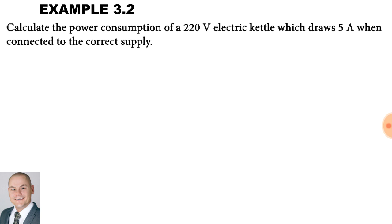Another calculation. Calculate the power consumption of a 220 volt electric kettle, which draws 5 amps when connected to the correct supply. The voltage is 220, the current is 5 amps, and the power is the unknown factor.